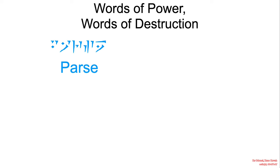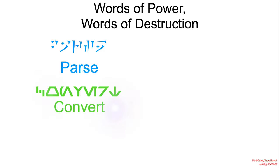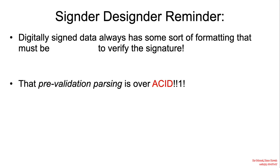The code was found to be parsing unhexified signature data. Digitally signed data always has some sort of formatting that must be parsed to verify the signature, and that pre-validation parsing operates over attacker-controlled input data.